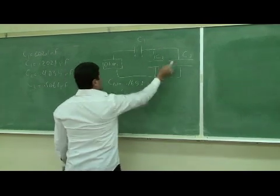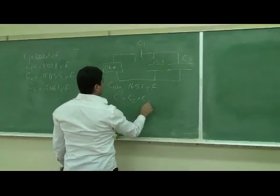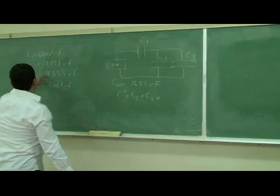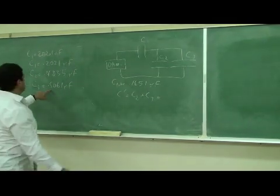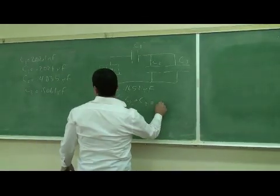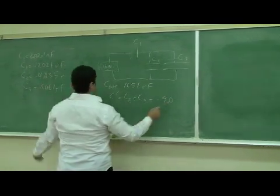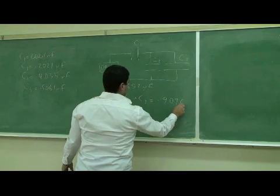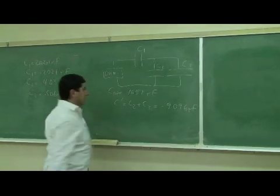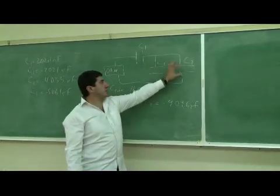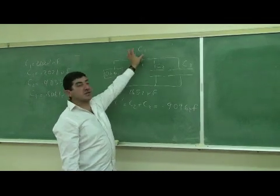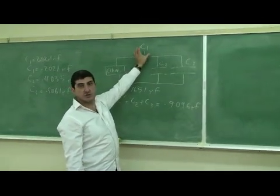C prime, we can say C2 plus C3, and you get 0.9096 microfarad. And then the combination of that, which is C prime, is in series with this. So they add their reciprocals.